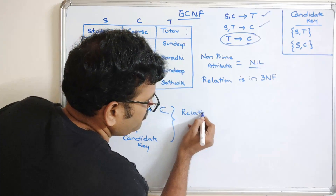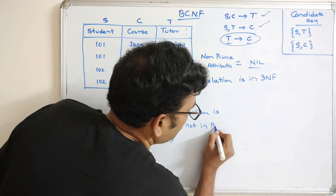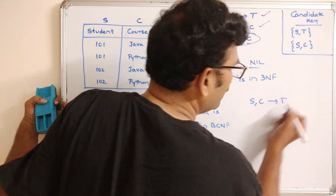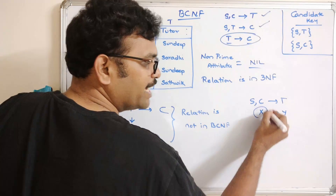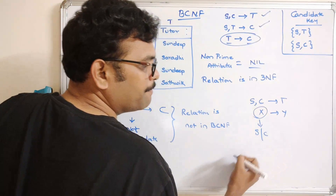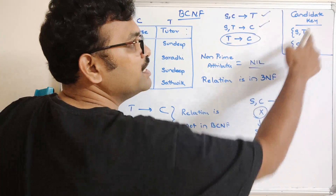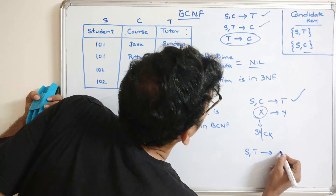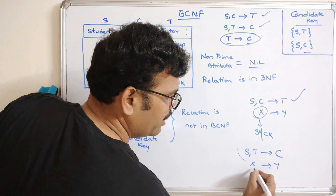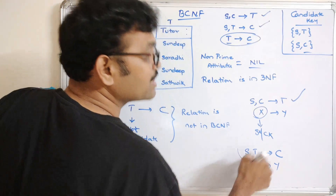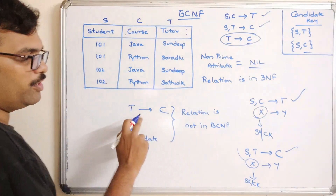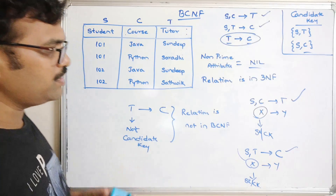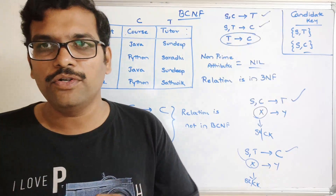Since T is not a candidate key, the relation is not in BCNF. The dependency T→C violates the condition that for all functional dependencies X→Y, X must be a super key or candidate key. Therefore we need to decompose the relation so that it satisfies BCNF.